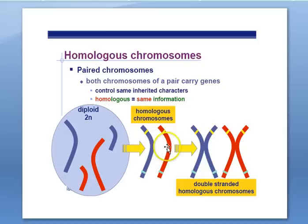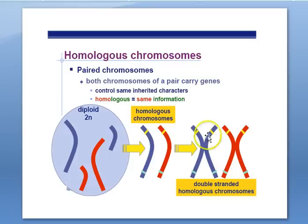Here we have two of the same chromosome during G1 of interphase, when we only have single-stranded chromosomes. During the S phase of interphase — as you may remember from mitosis and cell division — we make copies of the sister chromatids. So now we still have two chromosomes, each consisting of two sister chromatids.